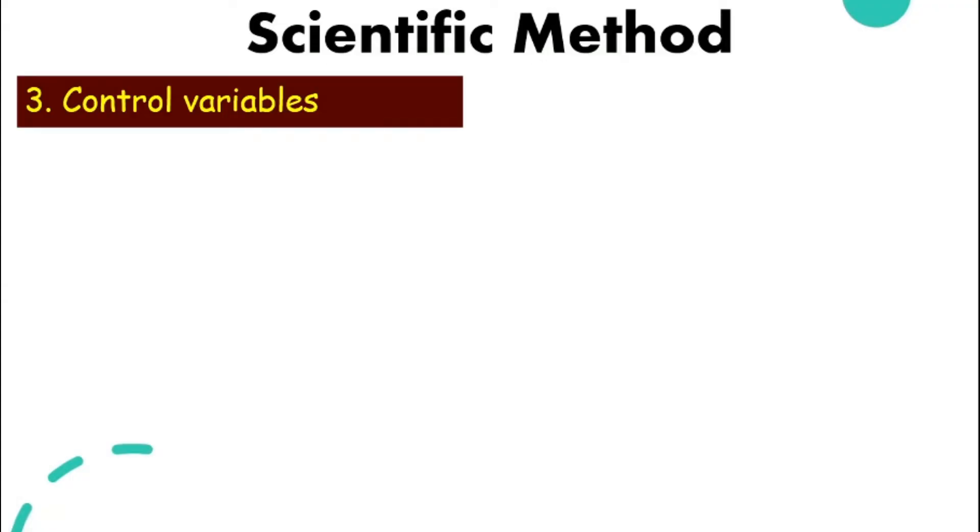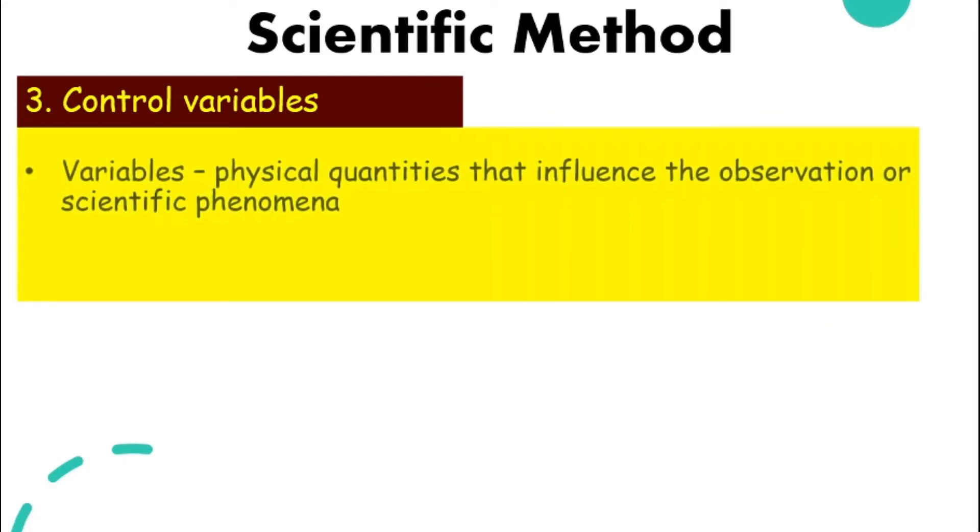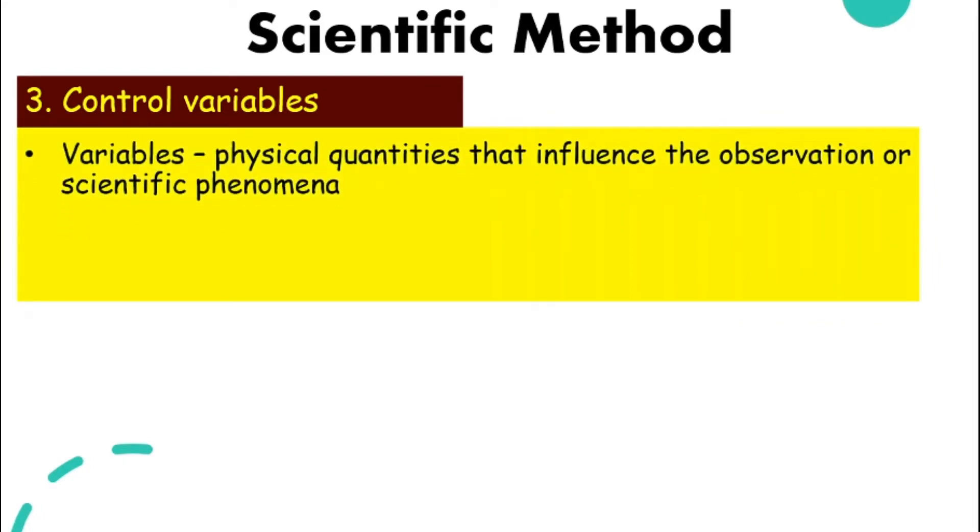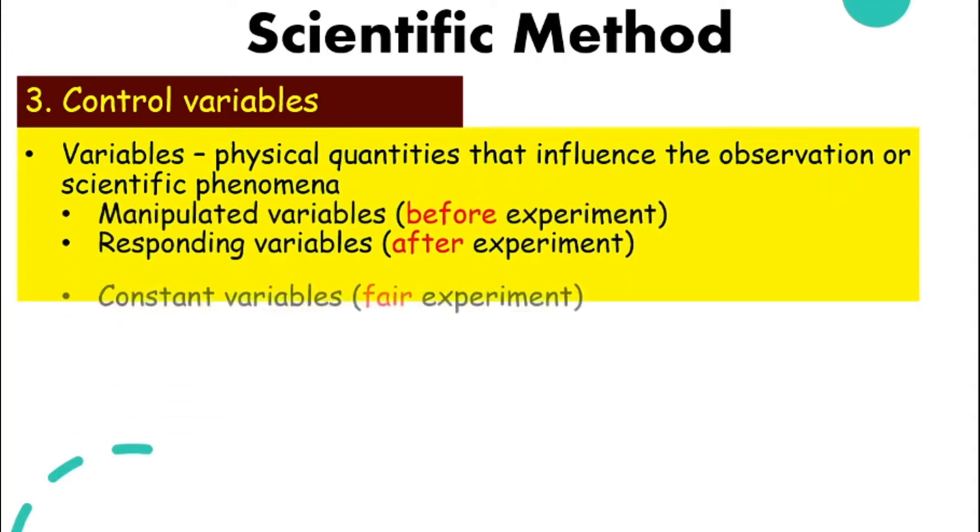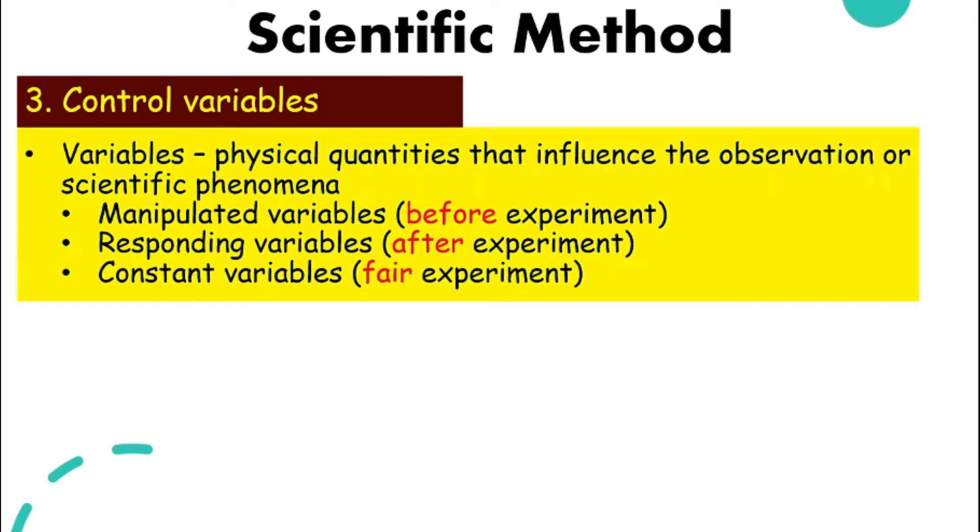Number three: control the variables. Variables are physical quantities that influence your observation or scientific phenomena. We have three types of variables: the manipulated variables, responding variables, and constant variables. I'm sure you have studied about these three in your primary school. So, how do we differentiate them?